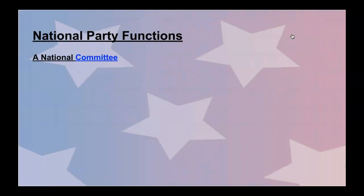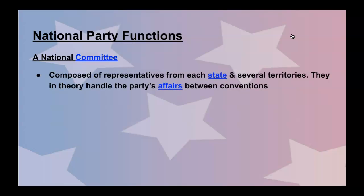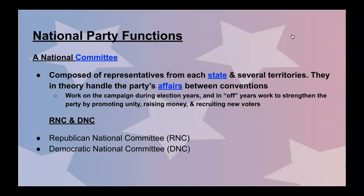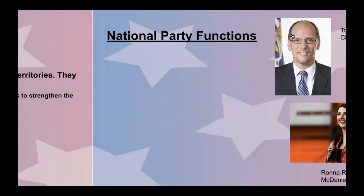The national committees are at the top and are composed of representatives from each state and several territories. They handle the party's affairs between conventions, looking at the nitty-gritty of people running, policies advocated for, and provisions in upcoming legislation. During election years they work on the campaign, raising money for advertisements and spreading the word. In off years they work to strengthen the party by promoting unity, raising money, and recruiting more voters. At the highest level you have the RNC — Republican National Committee — and the DNC — Democratic National Committee.